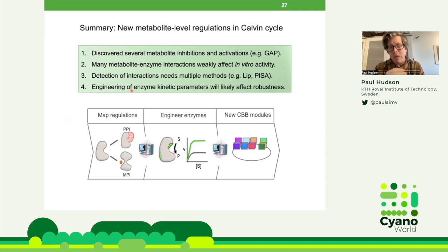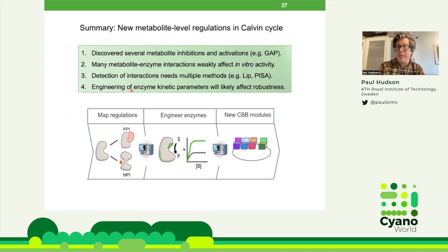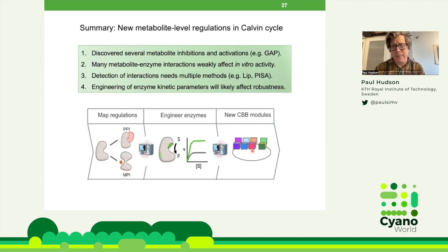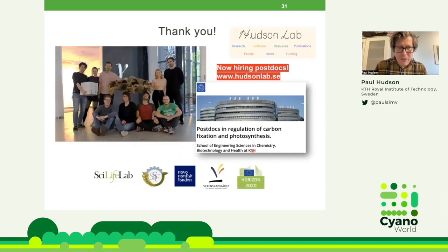When you start altering these regulatory kinetic parameters — like removing an allosteric regulation through mutagenesis — we can expect that this may increase flux toward your product, but it will likely decrease the robustness of the cell. These things are there for a reason. Maybe in a bioreactor we don't need robustness. Where we hope to go is to map these regulations, validate that they're true, mutate the enzymes in a clever way, and get new types of Calvin cycle modules that are more conducive to bioproduction. We're also looking to expand the group, so if you're interested, feel free to write or apply via our website.